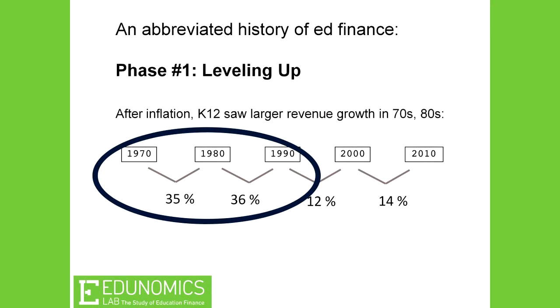The first phase is what we call leveling up. In the 70s and 80s, we added a lot of money to public education. There were big batches of students that were not served well at all — students with disabilities weren't getting services. If you look at expenditure growth after inflation from 70 to 80 and 80 to 90, we saw about 35 or 36 percent growth each decade, even after accounting for the number of students and inflation. That was the leveling up phase.